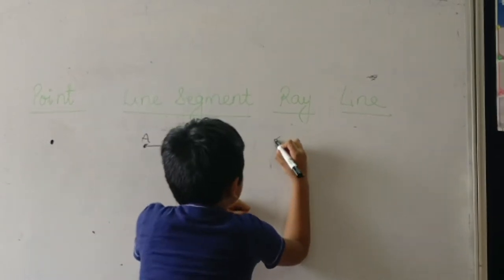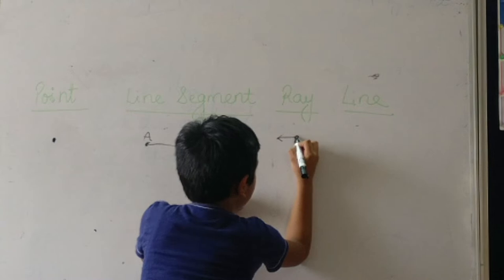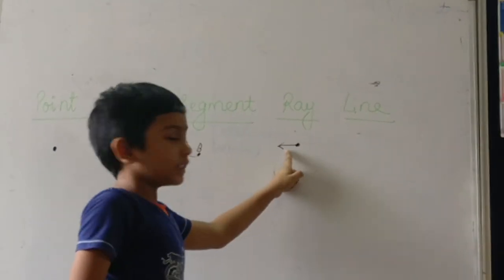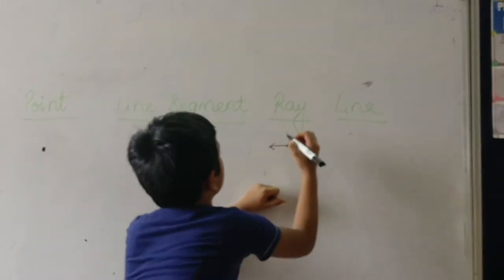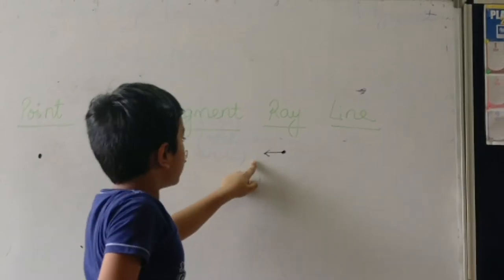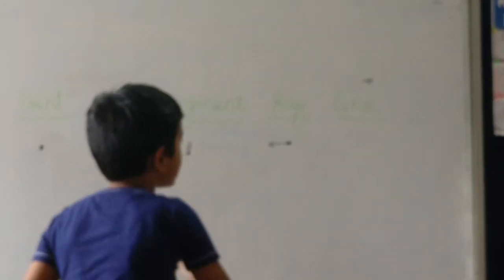Ray means one side arrow and one side dot. See, there is a dot. So, here it will go endlessly. Endlessly.